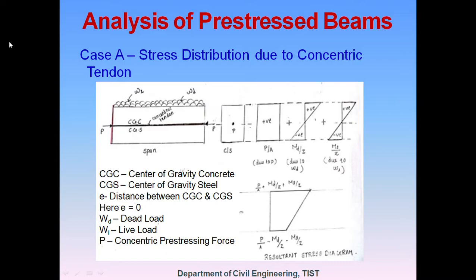For Case A, CGC means the center of gravity of the concrete and CGS means center of gravity of the steel. E means eccentricity, that is the distance between the center of gravity of concrete and steel. If the tendon is concentric, eccentricity is equal to zero; if it is eccentric, there will be a value for eccentricity. WD means dead load, WL means live load, and P is the pre-stressing force. Compressive stress is taken as positive and tensile stress as negative.